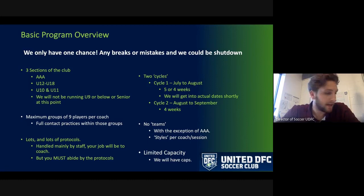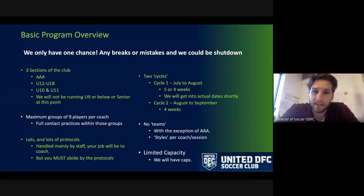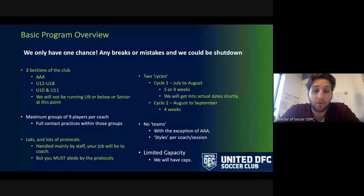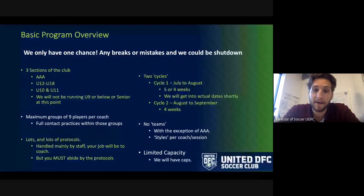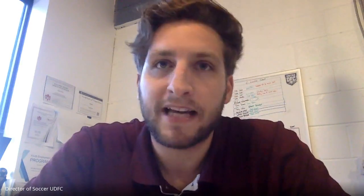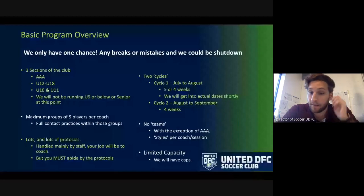We need all coaches to be on board with and abide by our protocols. The immediate plan is to have two cycles. The first starts in mid-July and runs to the middle of August — four or five weeks, and I'll explain the difference shortly. The second cycle follows immediately after and runs through to the middle of September — four weeks for everyone. We're not going to have teams necessarily; we'll have groups. They're basically going to pick themselves.